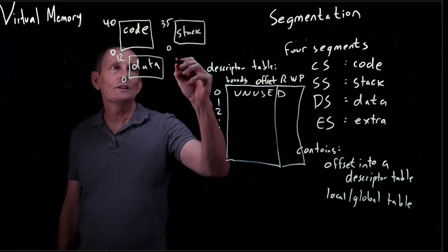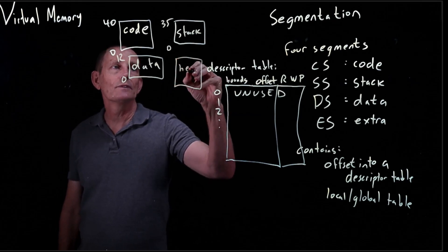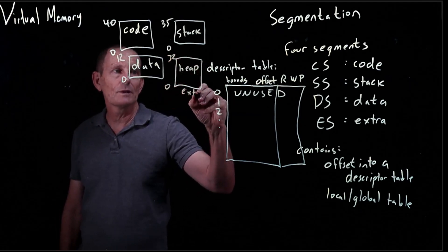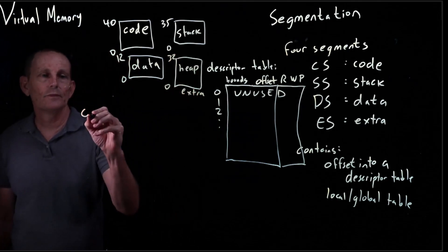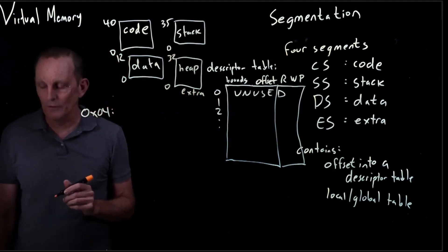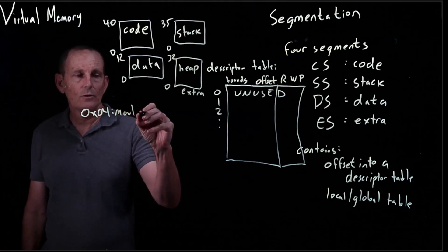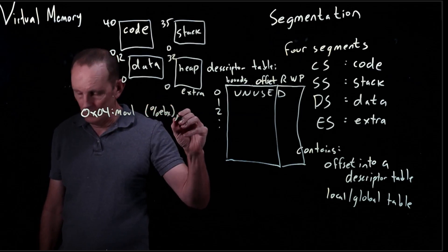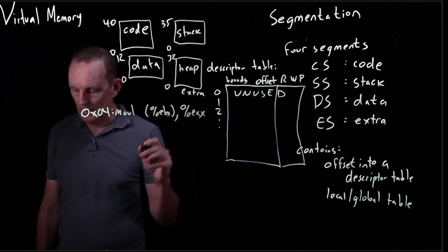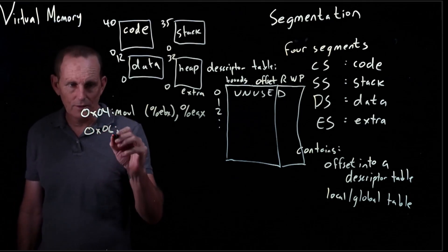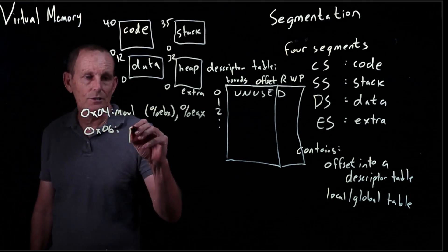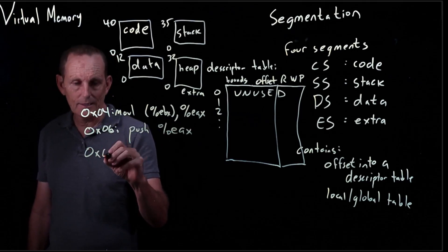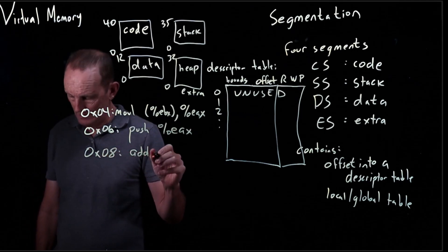Data might be our globals, and then here let's say we might have a heap that goes from 0 to 32, and this could use the extra segment. Here's going to be our code: at address 4 we want to move indirect into EAX, and then at 06 we want to push EAX, and then at 08 we're going to add 2 to the ESP.